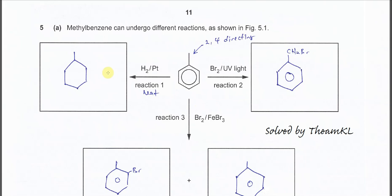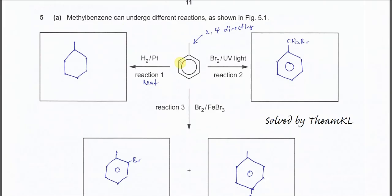Question 5a. Methylbenzene can undergo different reactions as shown in figure 5.1. For reaction one, it involves H2 and platinum — this is hydrogenation. The methylbenzene undergoes hydrogenation and forms methylcyclohexane, meaning the double bonds inside the benzene ring are now saturated.